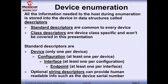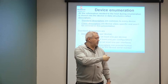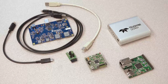All information exchanged during enumeration is stored in data structures called descriptors. There are standard descriptors — common to every device — and class descriptors specific to each device class. Standard descriptors are organized hierarchically: one device descriptor per device; one or more configuration descriptors; one or more interface descriptors per configuration; and one or more endpoint descriptors per interface. There are also optional string descriptors providing human-readable information like serial numbers — for example you can give a serial number to our boards when programming the USB firmware.